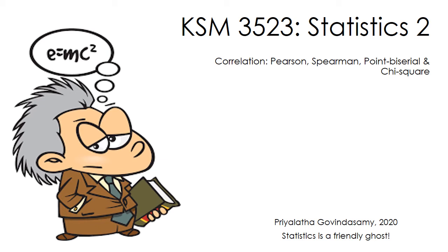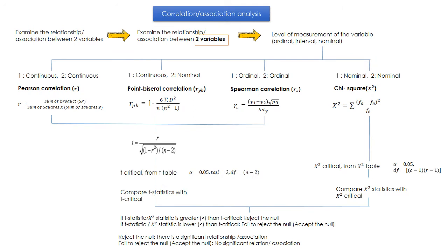Hello everyone. Welcome back to KSM 3523 Statistics 2. In this video, I'm going to show you how to compute correlation when you have different types of variables. I'm going to show an overall correlation analysis from Pearson's perspective, Spearman, point-biserial, and chi-square. Correlation and association analysis.